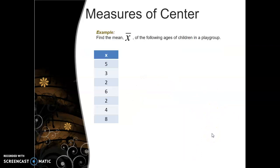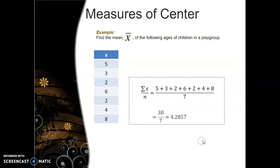Okay, let's do a quick example. So let's find the mean or the x bar of the following ages of children in a play group. So let's say we have a play group where their ages in years are given by 5, 3, 2, 6, 2, 4, and 8. To find the mean, we add up or find the sum of all of their ages. And it looks like there are 1, 2, 3, 4, 5, 6, 7 kids. So adding up their ages and dividing by 7, we get 30 divided by 7 or approximately 4.285, 7.